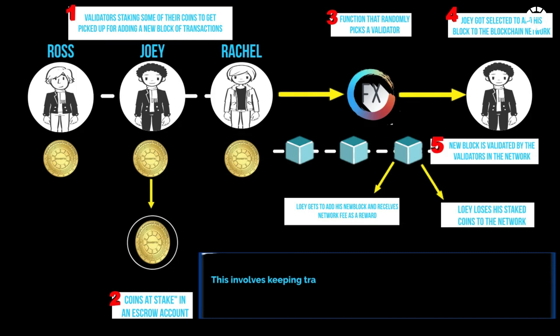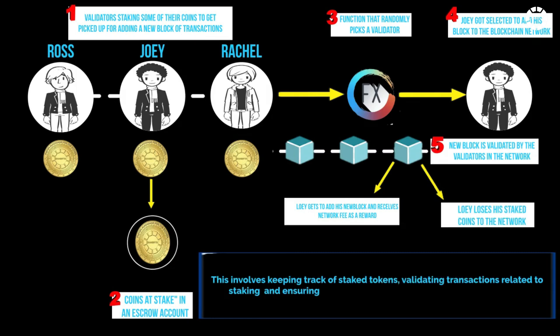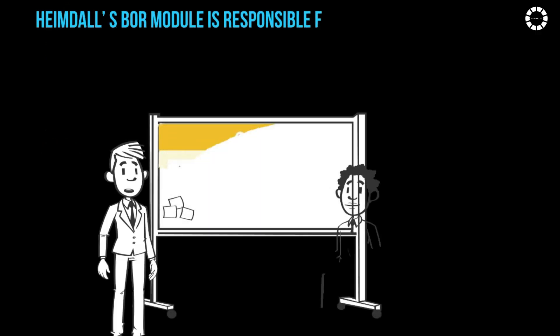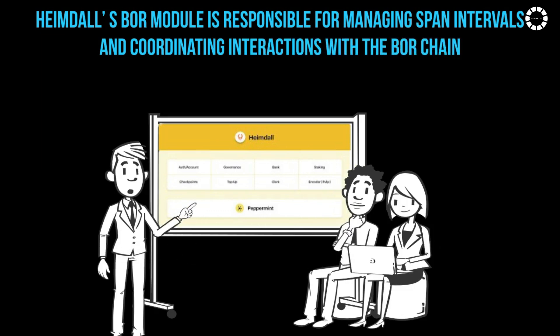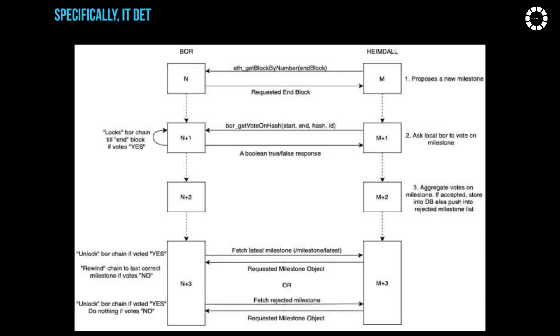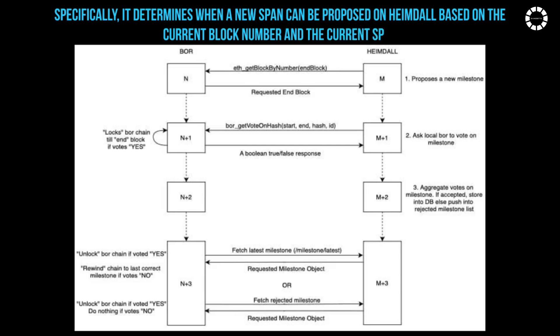This involves keeping track of stake tokens, validating transactions related to staking, and ensuring the security and integrity of the staking process. Heimdall's Bohr module is responsible for managing span intervals and coordinating interactions with the Bohr chain. Specifically, it determines when a new span can be proposed on Heimdall based on the current block number and the current span.